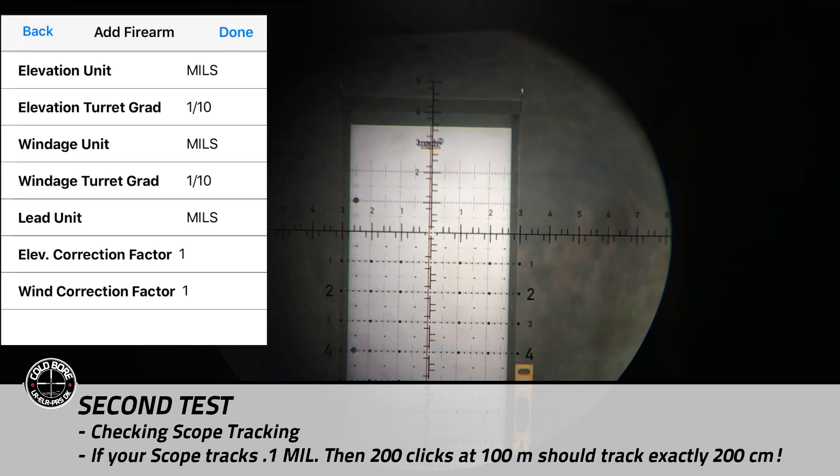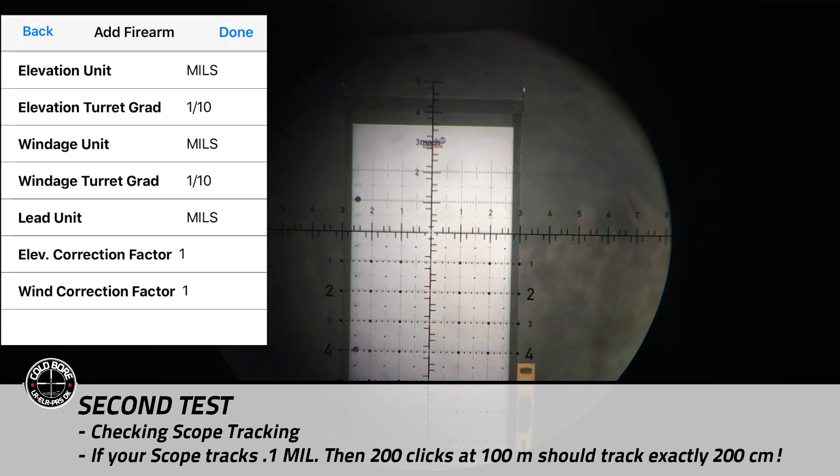Now luckily you do not have to buy a new rifle scope if it doesn't because in most quality ballistics apps you can enter a scope tracking sensitivity or a correction so you still get quality data out of your ballistic calculator.